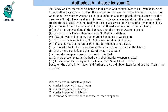Based on the above information and further analysis, Mr. Byomkesh found out that Yash is the murderer. So we know that the murderer is Yash based on the detective's investigation. We are not given how he figured it out. Now we have to answer the question: where did the murder take place?